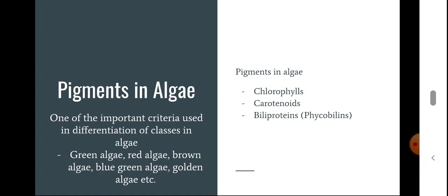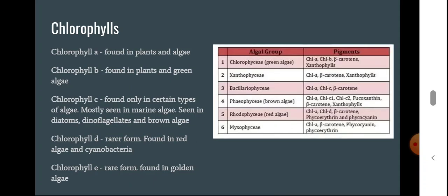The first category of pigments is chlorophylls. There are different types: chlorophyll a, b, c, d, e, and within c there can be c1 and c2. Chlorophyll a is found in all plants — terrestrial as well as almost all algae. Chlorophyll b is found in plants and green algae. Chlorophyll c is found only in certain types of algae, mostly marine algae — diatoms, dinoflagellates, and brown algae. Chlorophyll d is a rarer form found in red algae and cyanobacteria.